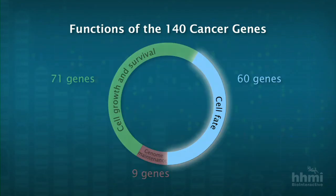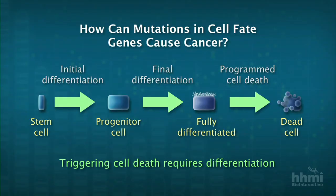The third category — 60 genes — I've called cell fate. I'm talking about the process by which a stem cell from a tissue differentiates, gives birth to progeny — progenitor cells — which then further differentiate into mature cells of whatever tissue that is.